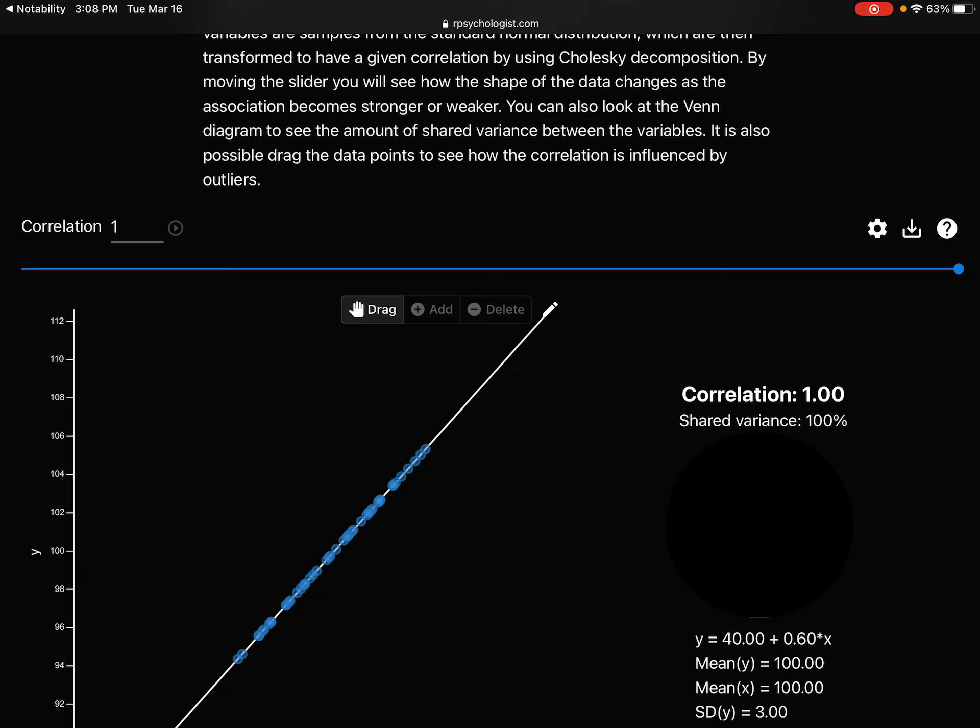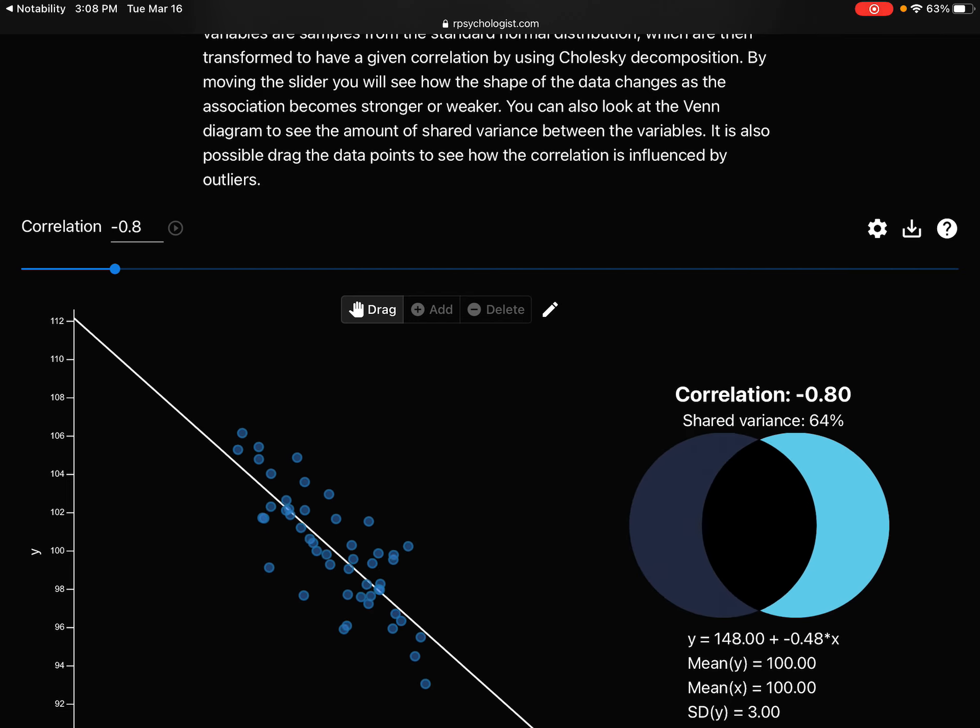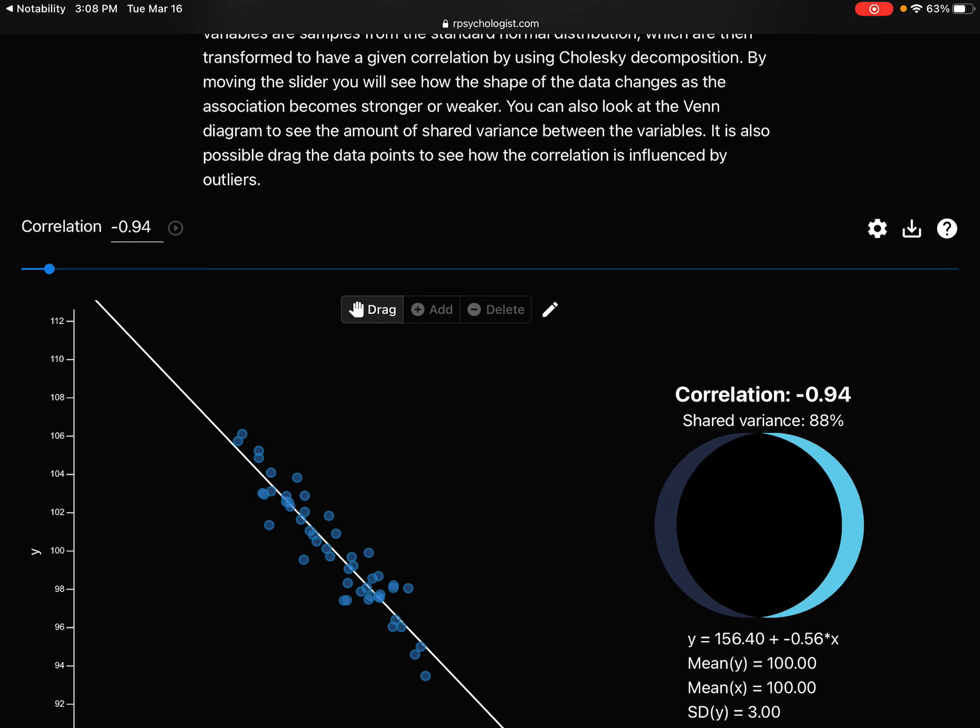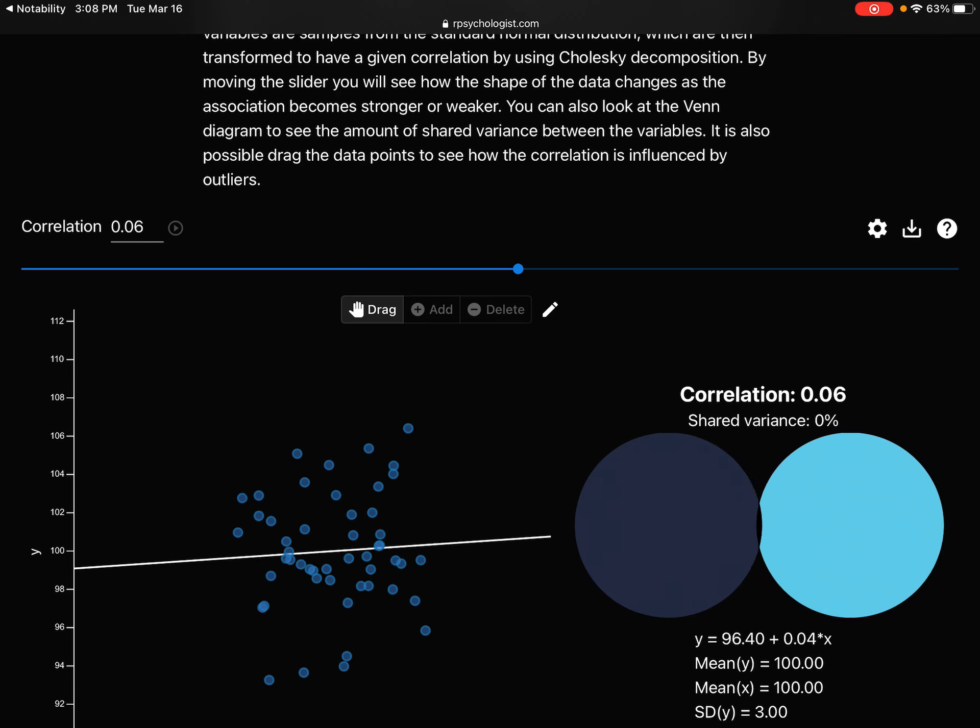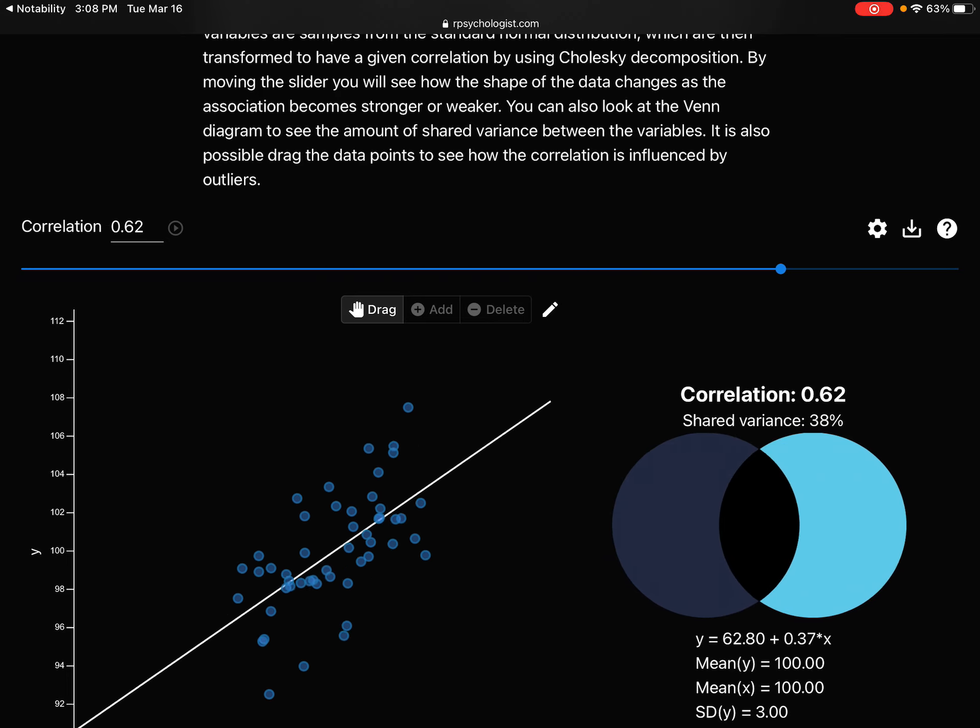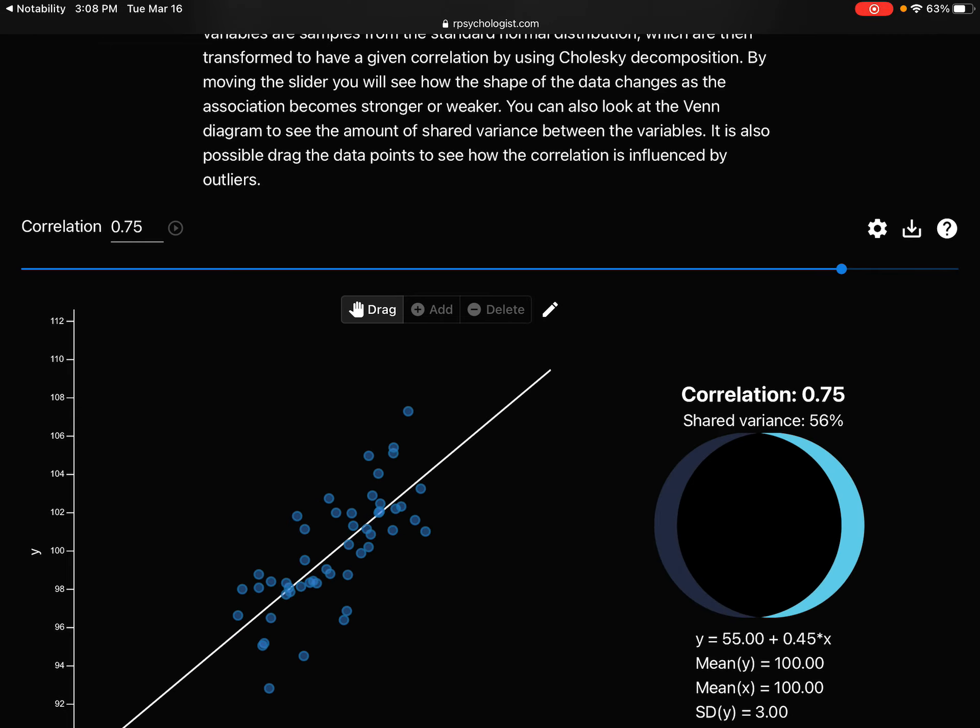So what do you notice? What do you wonder? You can play with this a little bit and see how that changes. There's some more detail on this page as well, and you can certainly read it, but right now I just want you to notice how that correlation value changes as it relates to how those scatter plot points line up or don't line up.